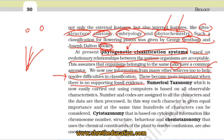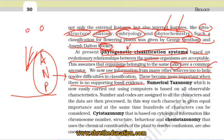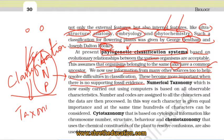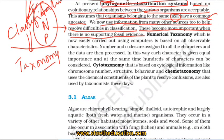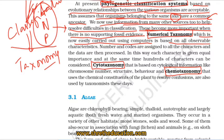There are three classification systems: artificial, natural, and phylogenetic. Numerical taxonomy, which is now easily carried out using computers, is based on all observable characteristics — such as flower structure and number of petals.